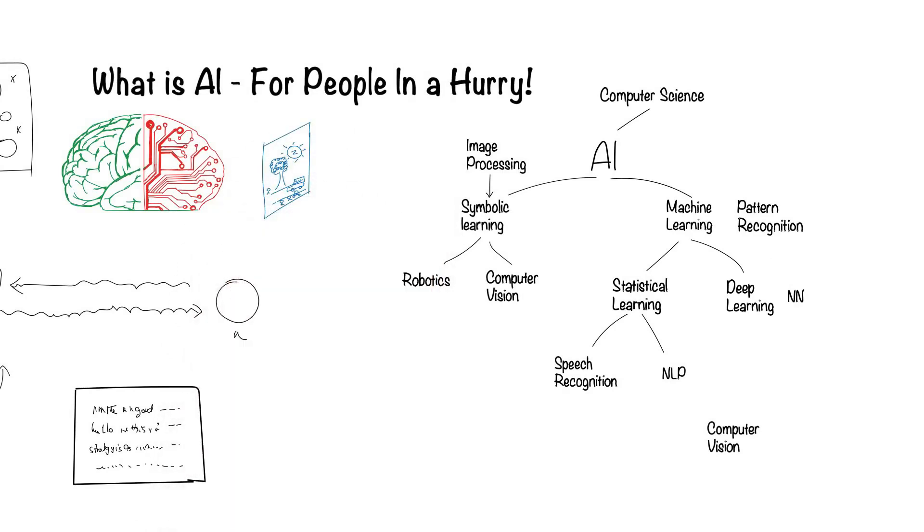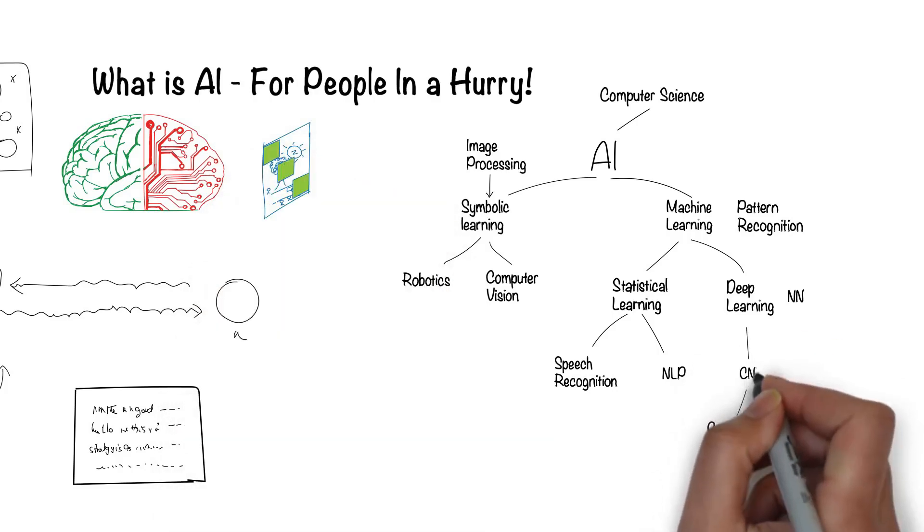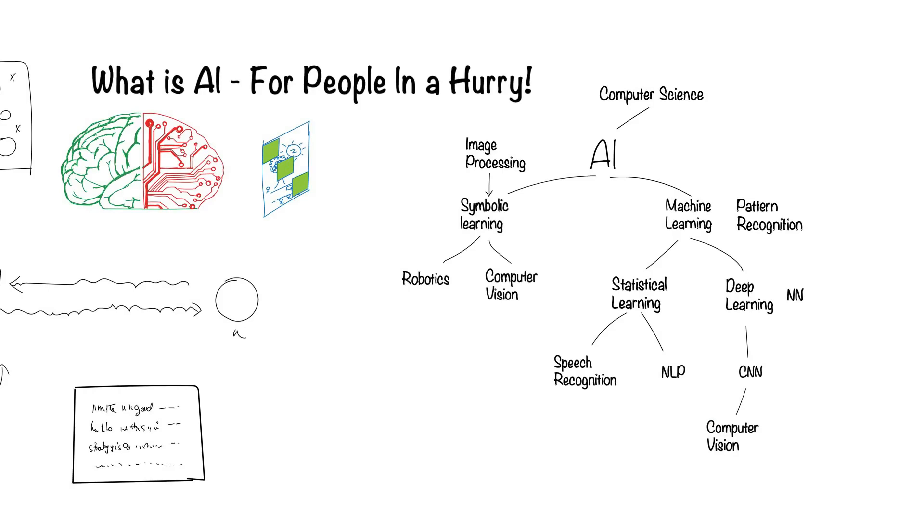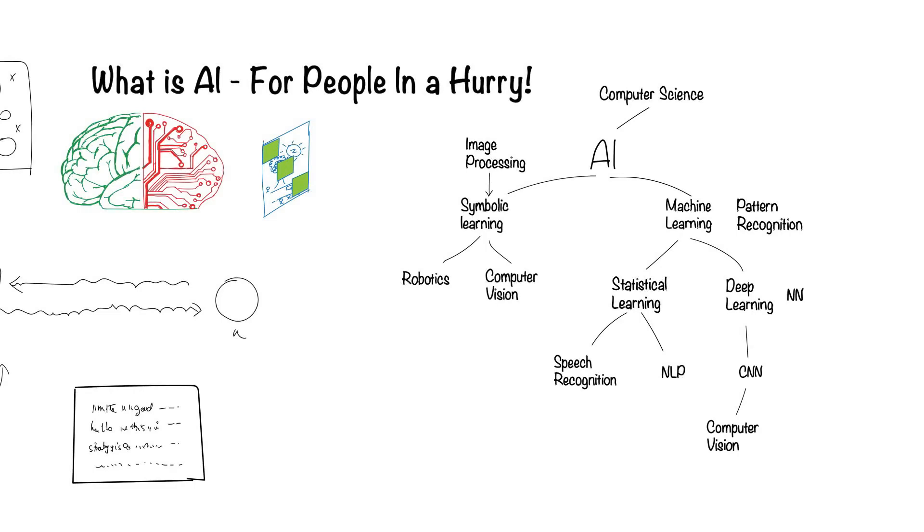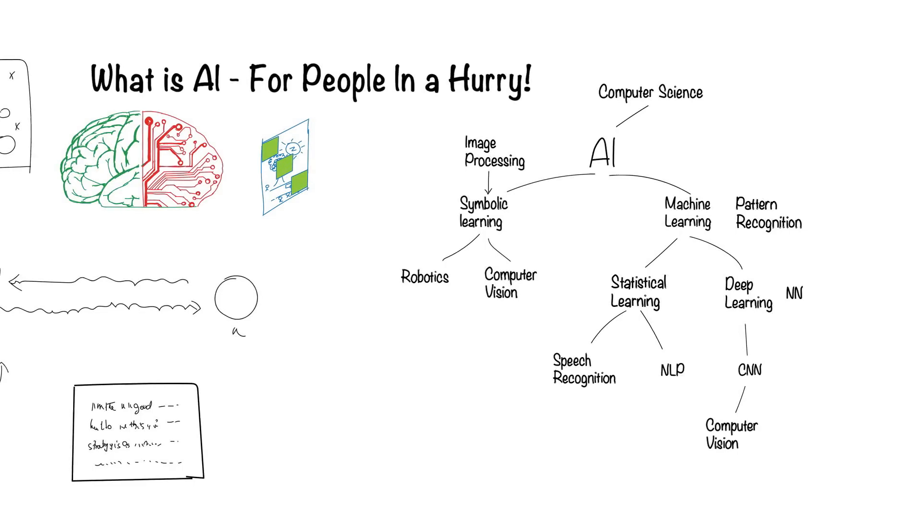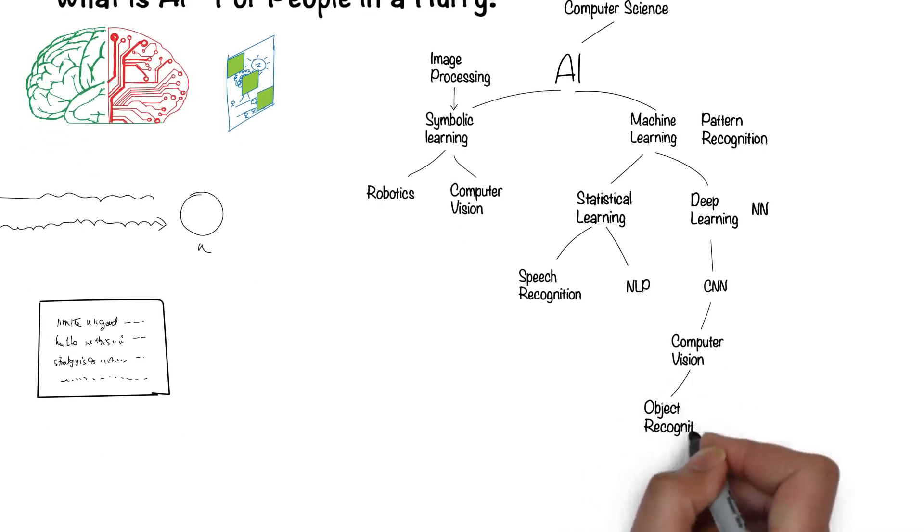If we get the network to scan images from left to right, top to bottom, it's a convolution neural network. A CNN is used to recognize objects in a scene. This is how computer vision fits in, and object recognition is accomplished through AI.